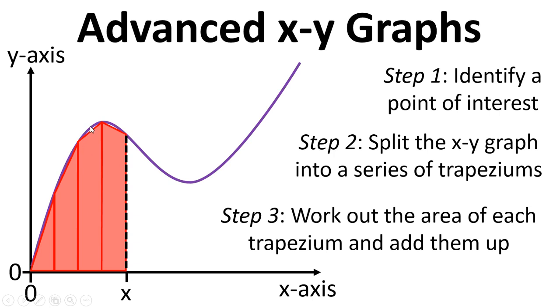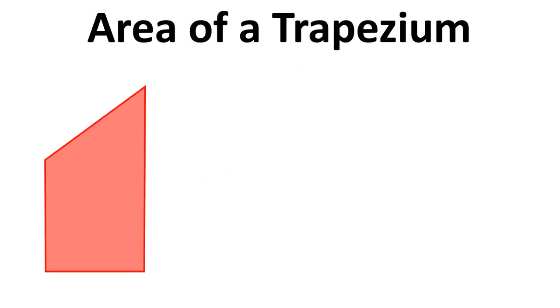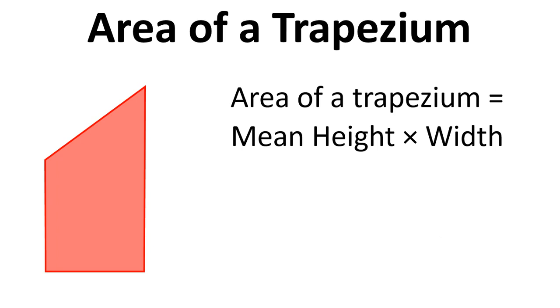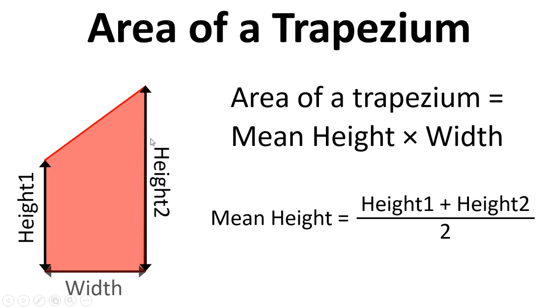Now this method is only approximate because it won't exactly follow the curve in some places, and so the area won't be exactly right. But the smaller we make these trapeziums, the narrower we make them, then the more accurate we will be. The area of a trapezium is the mean height times its width, and the mean height is its two heights divided by two. So height one plus height two divided by two gives us the mean height of the trapezium, and then multiply by the width will give us the area.